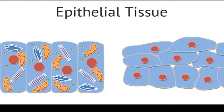These sheets of cells may be one to many layers thick. This epithelial tissue is used to line the surfaces of our body, including both our outer and inner surfaces. The outer layers of our skin are definitely composed of epithelium, along with the inner lining of our digestive and respiratory systems. In fact, many of our internal organs and blood vessels have a lining of epithelial tissue.